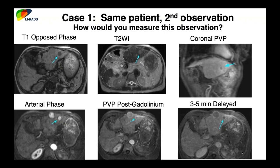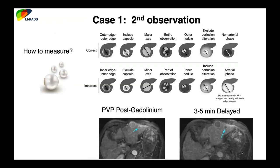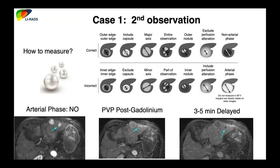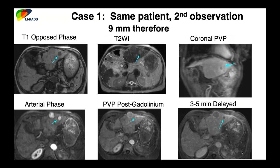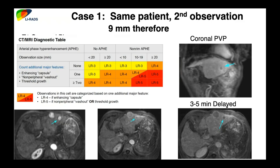Measurement should be outer margin to outer margin, including the capsule if present. Don't measure on the arterial phase because corona enhancement can cause overestimation. Use portal venous or delayed phase instead. In this case, the observation measured 9 millimeters. Looking at the table, something less than 10 millimeters with the same features can only be called LR4. This maintains consistency with OPTN and AASLD, which has now incorporated LIRADS into their system.